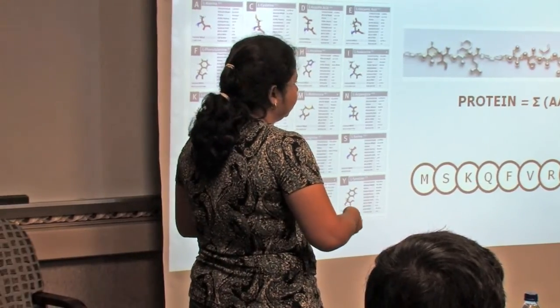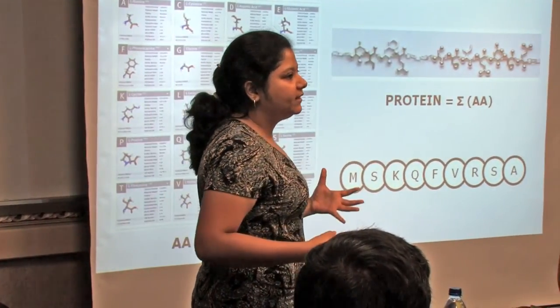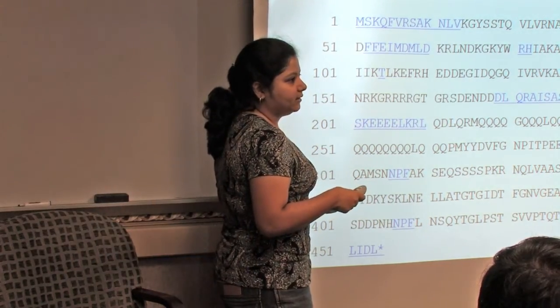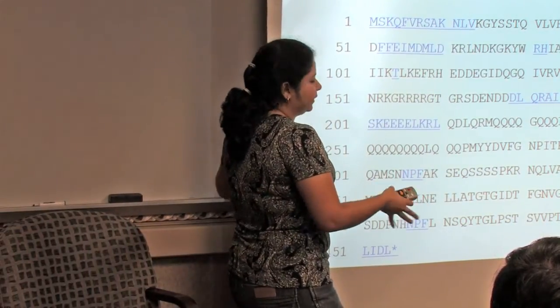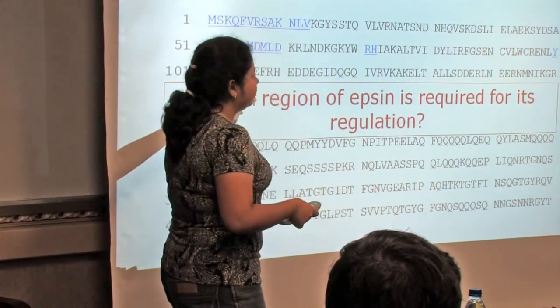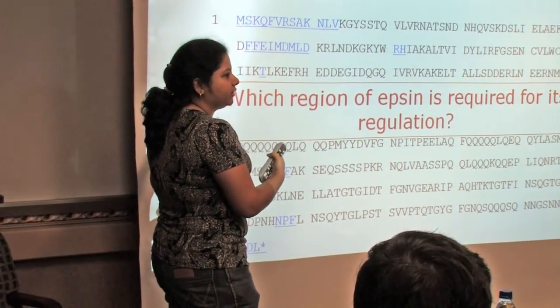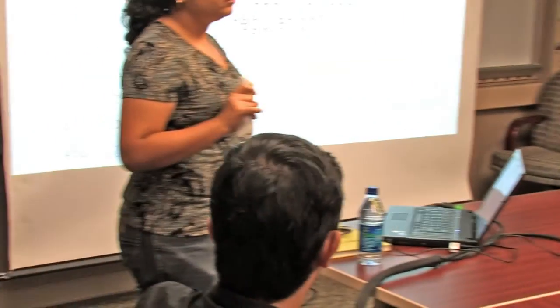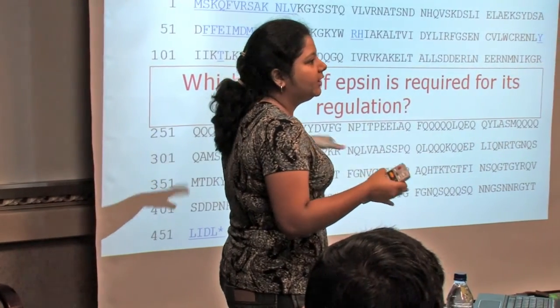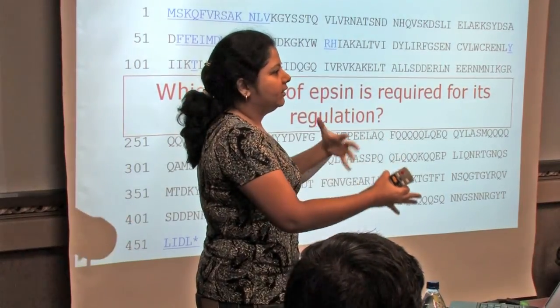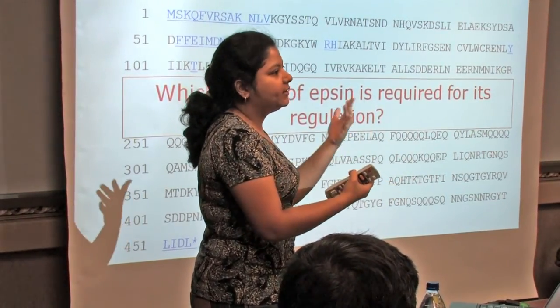If we could understand what the function of this sequence is, we could know what the protein is good for. Epsin is made up of 454 amino acids. When I say my question is which region of epsin is important for its regulation, I mean which amino acid or which groups of amino acids are important for its regulation. We basically look at the linear structure — not interested in secondary or tertiary structure per se — but the linear structure is important because it is the basis of protein folding. Once we know what sequence is important, we will know that it is important for folding the protein into secondary or tertiary structure.